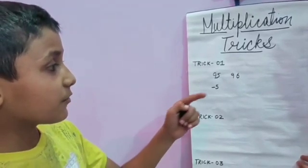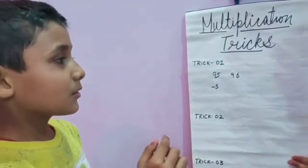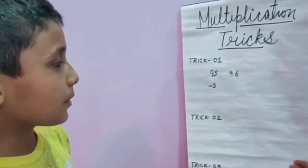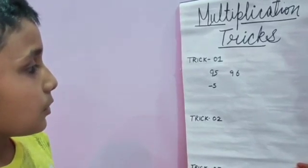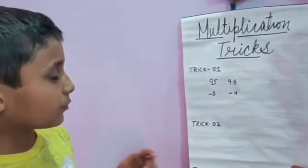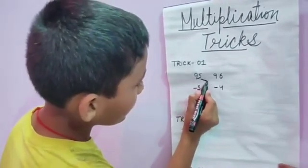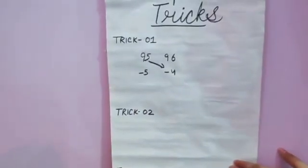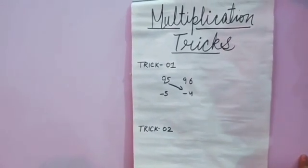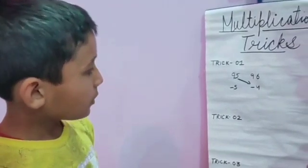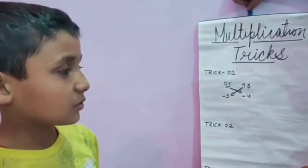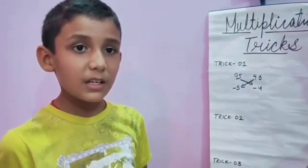Now we count the difference between 100 and 96. We subtract 96 from 100 and we get 4. Then we do cross subtraction: 95 minus 4 gives 91, and 96 minus 5 also gives 91. The result is the same.